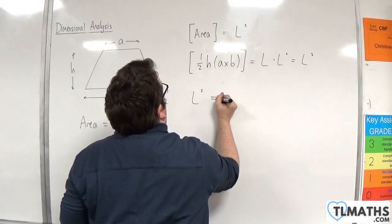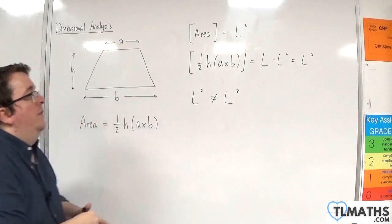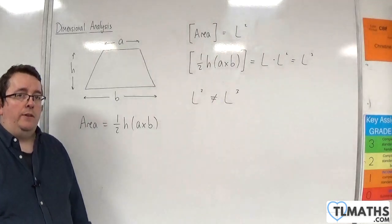Now, L squared is not equal to L cubed, and so that means that it is not dimensionally consistent.